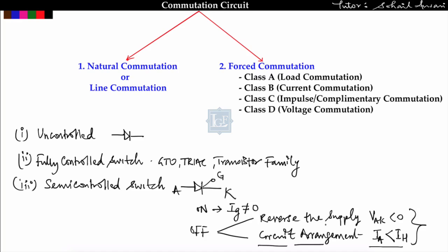A commutation circuit is nothing but a circuit arrangement which is used to turn off the switch. I divided the commutation circuit into two categories: first is natural commutation, also known as line commutation, and second is forced commutation. Forced commutation is again divided into four categories: Class A commutation, Class B commutation, Class C commutation, and Class D commutation. We will learn about all these commutation techniques one by one.